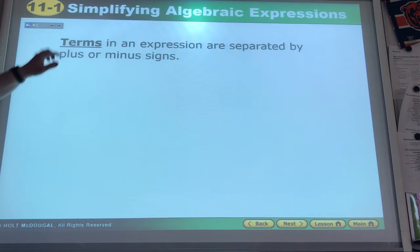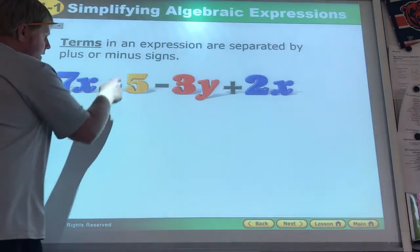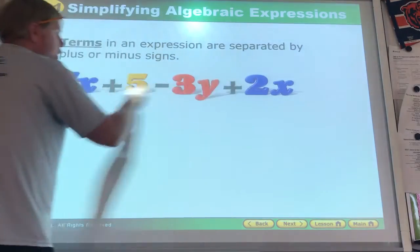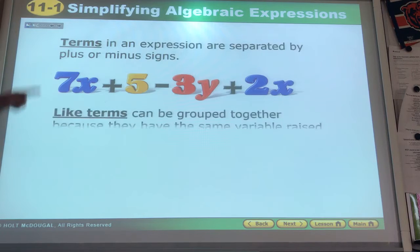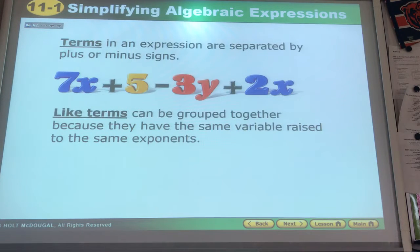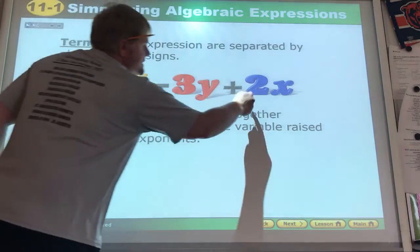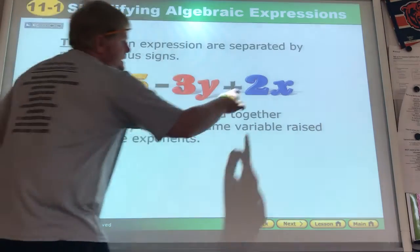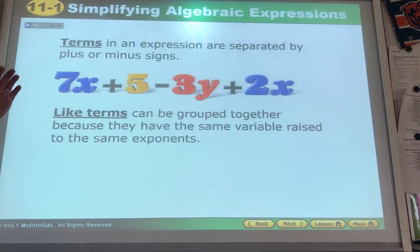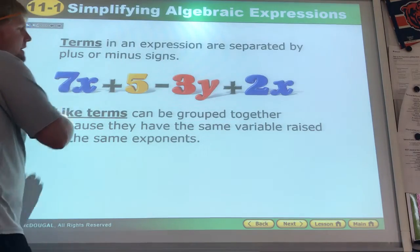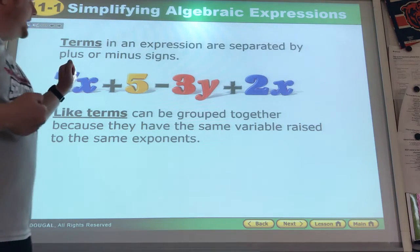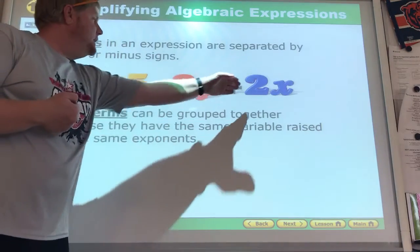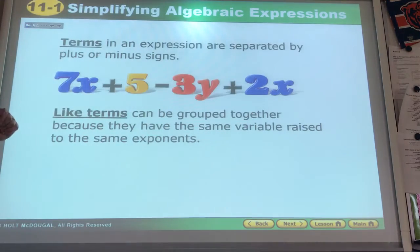Terms in expressions are separated by the symbols. There are four terms here. Some of them might have things in common, but to be like terms, you need to have exactly the same thing in common. 7x to the first, 2x to the first, those are exactly alike. When that happens, we can add the whole numbers or the numbers that are in there. So we could also say 9x plus 5 minus 3y if we add the 2x and the 7x.